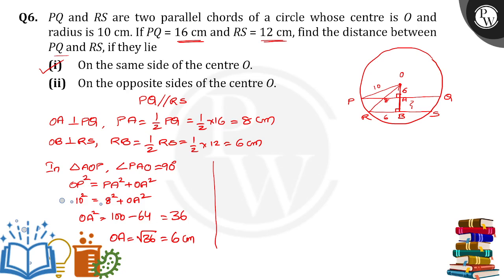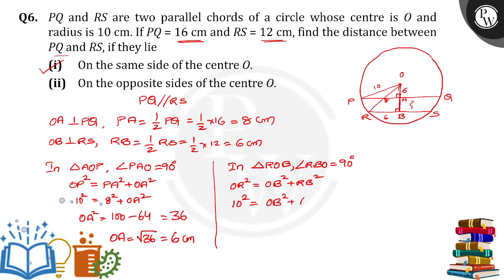Now taking triangle ROB: angle RBO is equal to 90 degrees, so we apply Pythagoras theorem again. OR² = OB² + RB², so 10² = OB² + 6², meaning 100 − 36 = OB², so OB² = 64. Therefore OB is equal to the square root of 64, which is 8 centimeters.